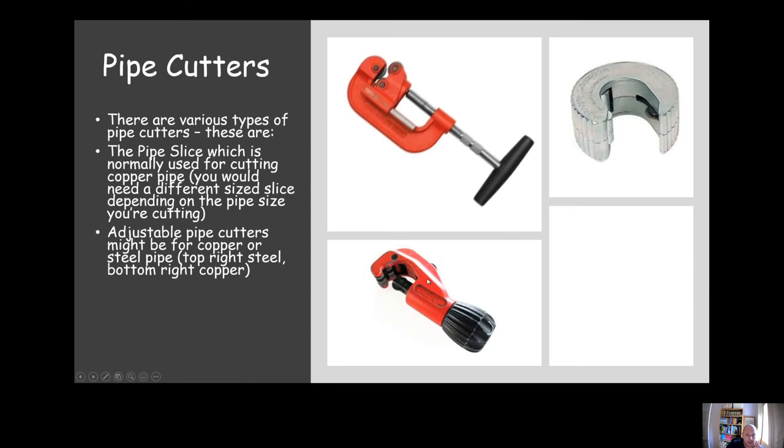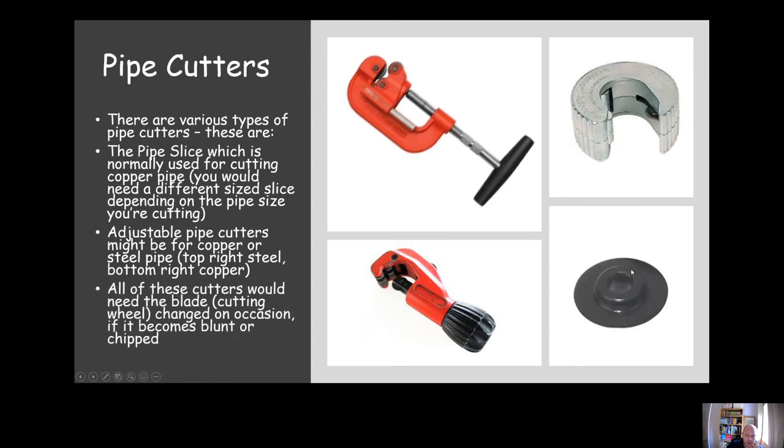Here we've got adjustable pipe cutters. The bottom one here you'd use with copper and the top one here you'd use with steel. This is the cutting wheel which would need to be replaced if it becomes blunt or chipped. You check that before you use the tool to check it's in good condition.